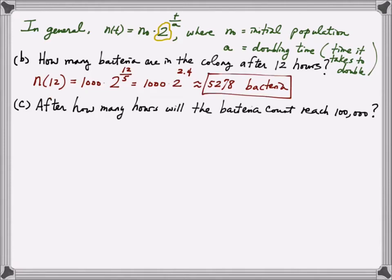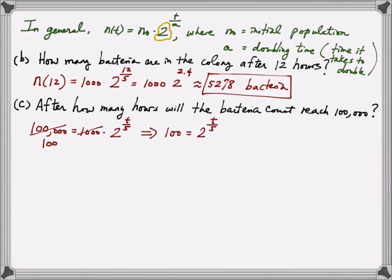In part C, we ask the reverse question: after how many hours will the bacteria count reach 100,000? This asks for the T value when N equals 100,000 — the input when the output is given. To solve, let 100,000 equal 1,000 times 2 raised to T over 5. First, isolate the exponential by dividing both sides by 1,000, giving 100 equals 2 to the T over 5. To undo the exponential, take the natural log of both sides — you can use any log, but natural log is convenient for a calculator.